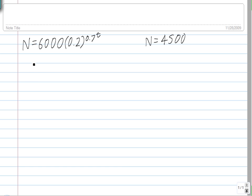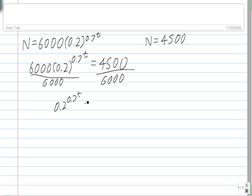So 6,000 times 0.2 to the 0.7 to the t power equals 4,500. And I just switch the sides to keep the variable we're solving for on the left side. So first divide both sides by 6,000 and you're left with 0.2 to the 0.7 to the t equals 0.75.